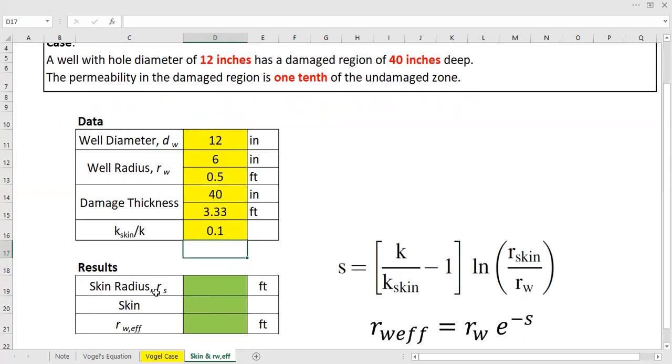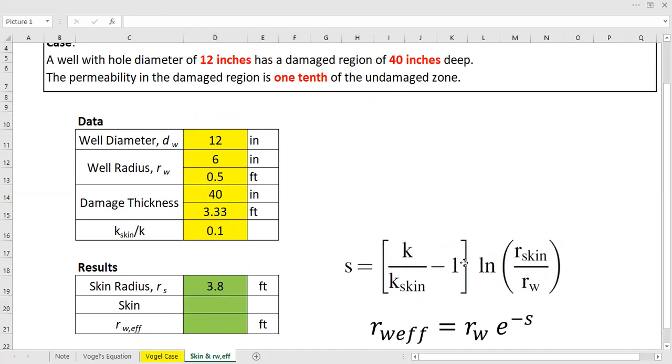So we need to calculate this one, the skin radius. And of course the skin radius is the wellbore radius plus the damage thickness or damage penetration. All right, 3.8 feet.